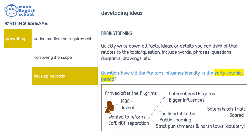Brainstorming is another option for developing ideas. When brainstorming, you simply write down anything you know about the subject. You can include pictures, charts, bullets, phrases, sentences, and your notes do not need to be organised in any way. Again, setting a time limit is a good idea for this activity.